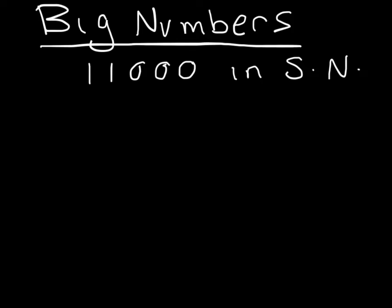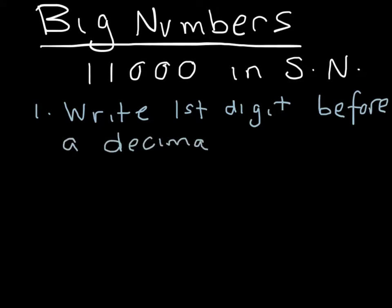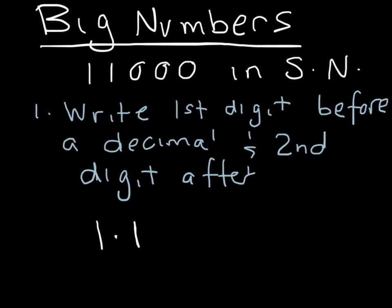Say I want to write the number 11,000 in scientific notation. Here's basically what you do. The first thing you do is you write one number, first digit before the decimal place, second digit after decimal. So the first step then will look like this, 1.1. That's how it's going to start.